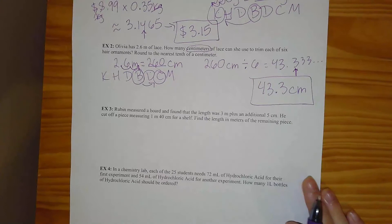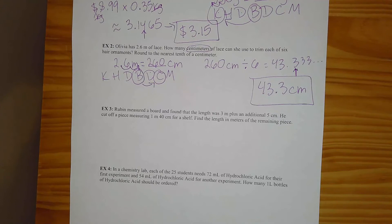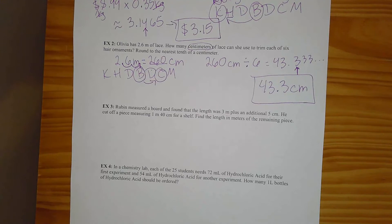Hopefully you're seeing the same kind of steps: I'm converting, then figuring out if I'm multiplying, dividing, adding, or subtracting — what operation am I doing — and then rounding. Let's do one more.